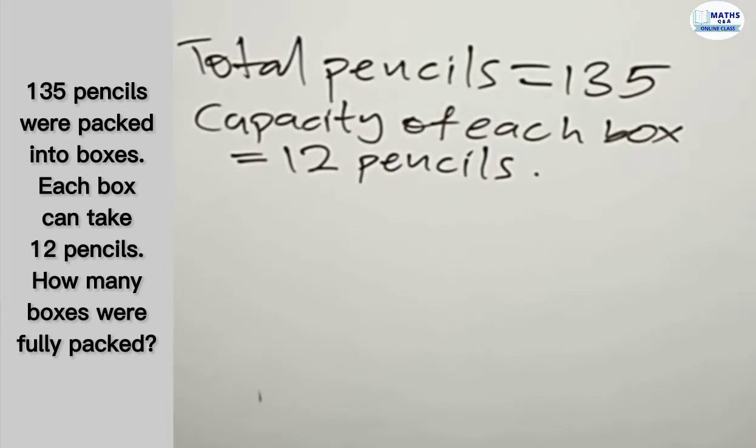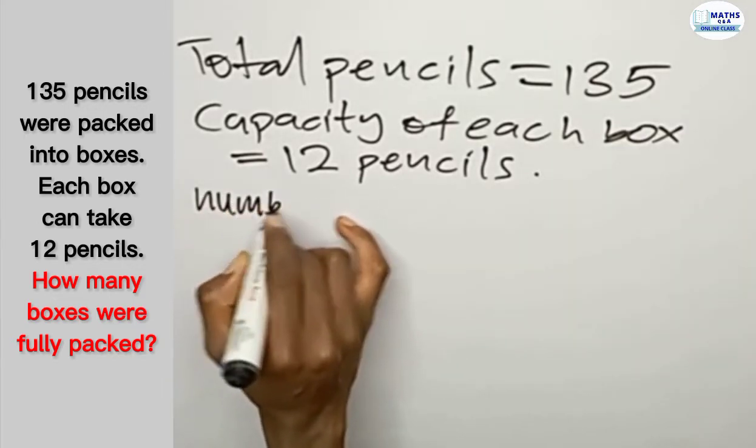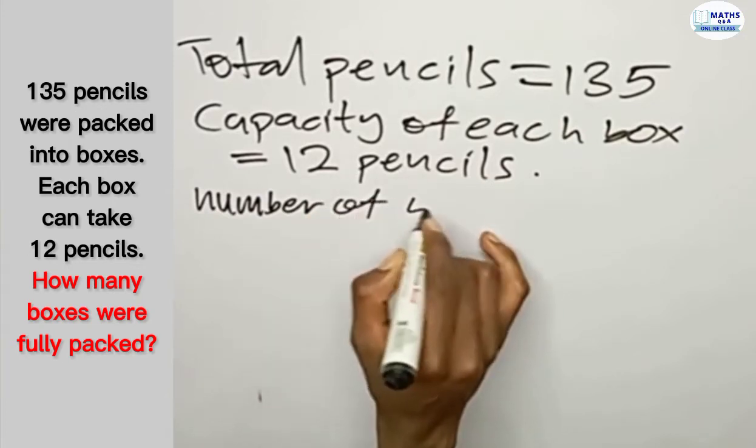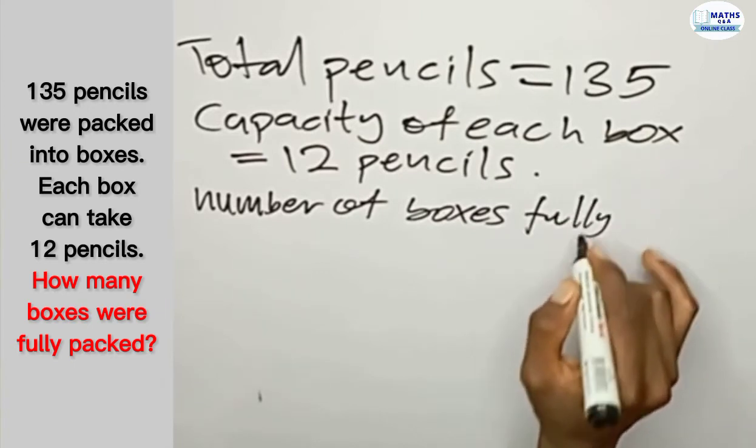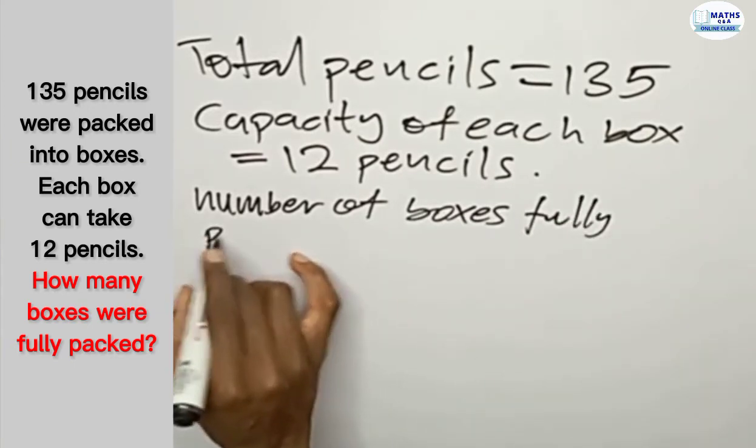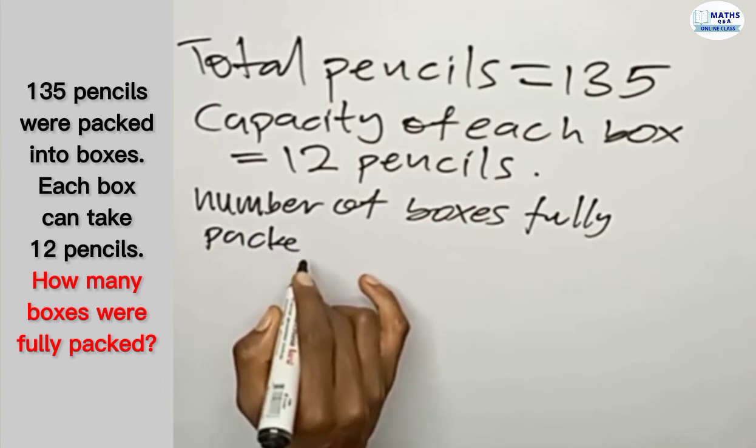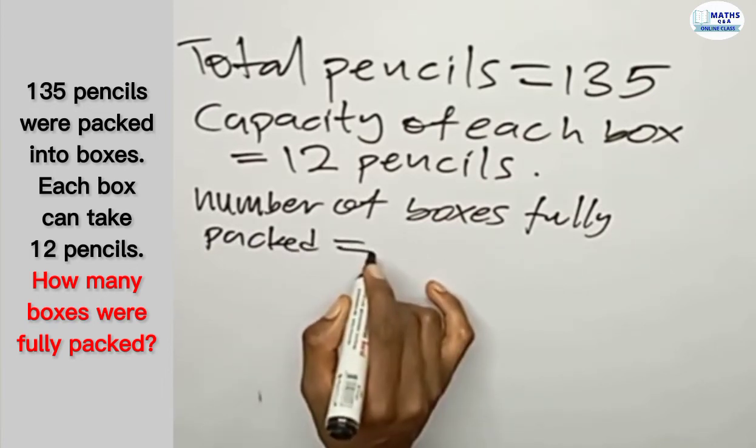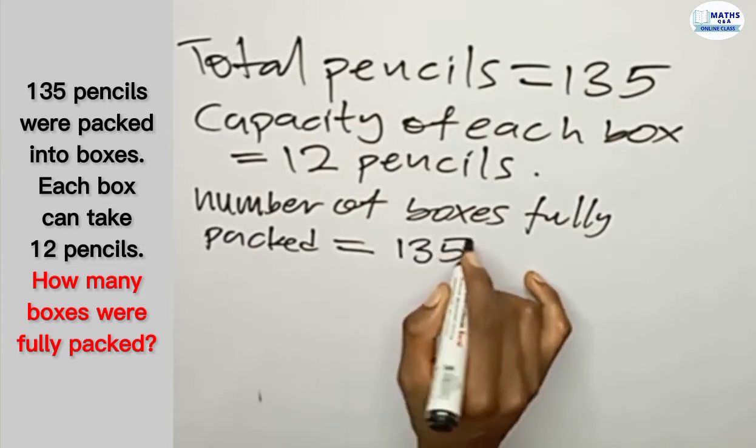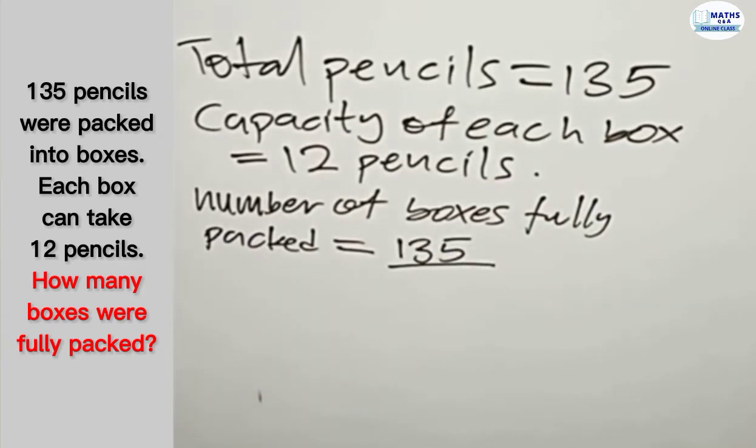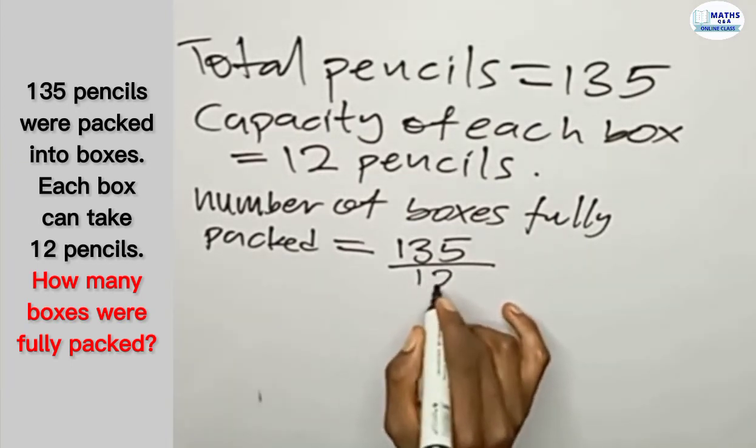Now we have to find the number of boxes that will be fully packed. So number of boxes fully packed will be equal to the total number of pencils, which is 135, divided by the number of pencils that can be packed into each box, which is 12.